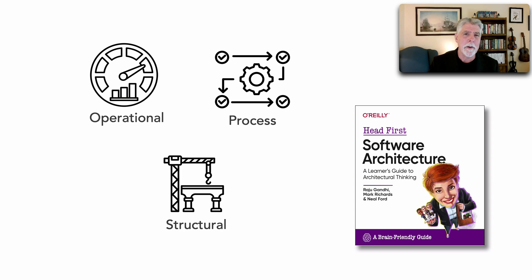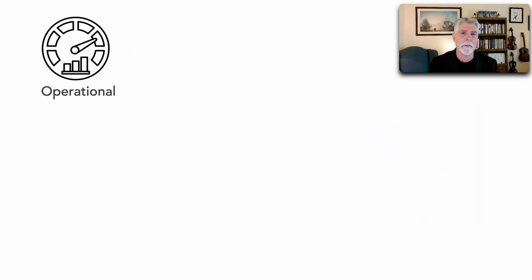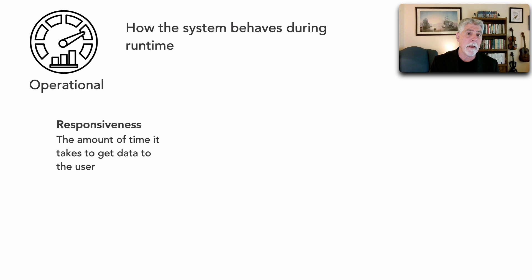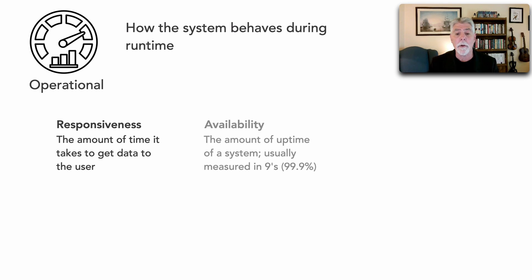Let's start our journey with the operational characteristics. These group of characteristics really describe how the system behaves at runtime, and there are a lot of common characteristics — these are the ones we mostly know about. Things like responsiveness, the amount of time it takes to get data to the user. Another good example is availability, which we talk about a lot in terms of an architectural characteristic — the amount of uptime of a system, usually measured in nines of availability, like 99.9% availability.